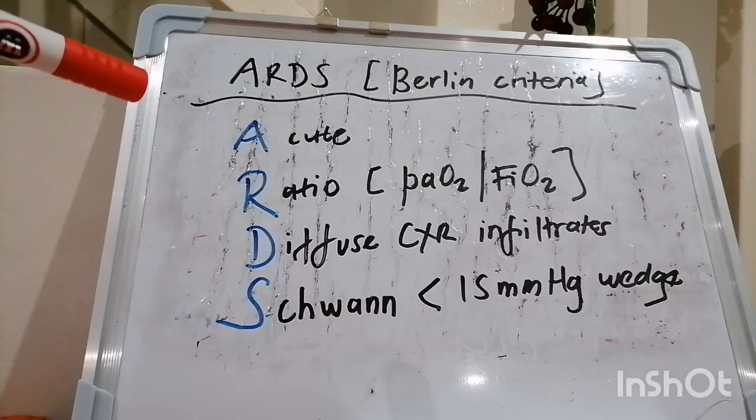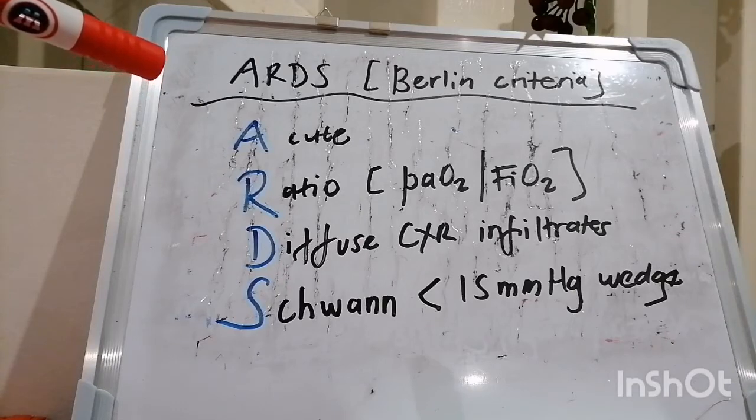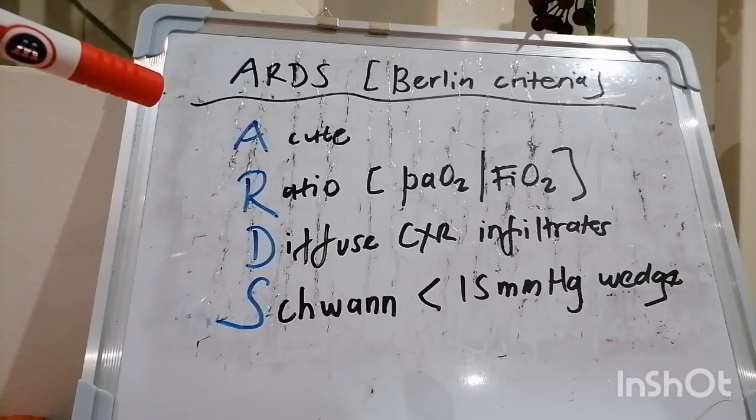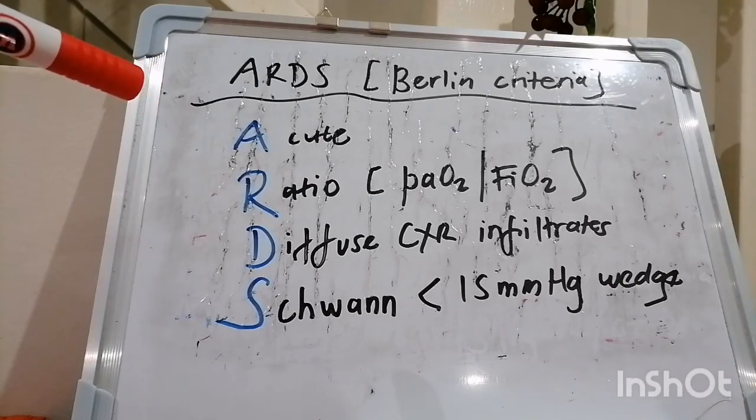So if this ratio is between 200 and 300, then that indicates mild ARDS. If the PF ratio is between 100 and 200 millimeters mercury, it signifies moderate ARDS. And if it's below 100, it signifies severe ARDS.